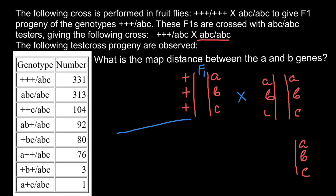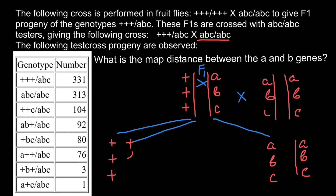One combination occurs when no recombination happens: the intact plus, plus, plus chromosome is inherited. Another non-recombinant variant is the intact small a, small b, small c chromosome. If crossing over happens between gene A and B, we get: plus, small b, small c — and the reciprocal: small a, plus, plus.